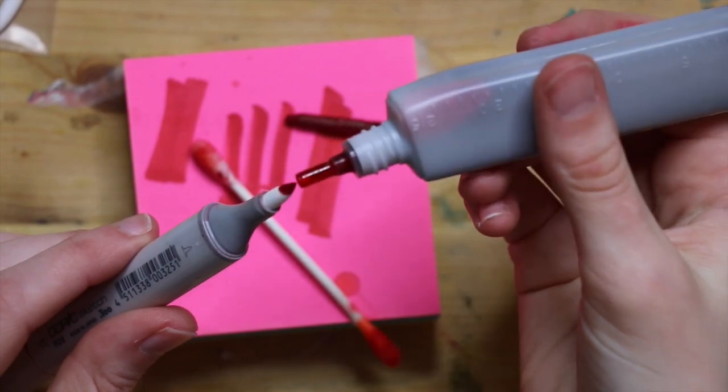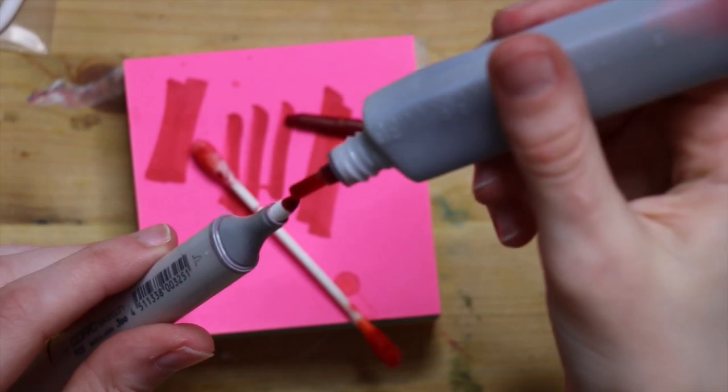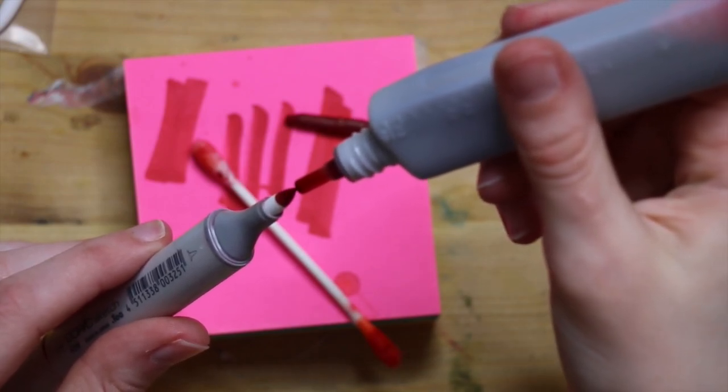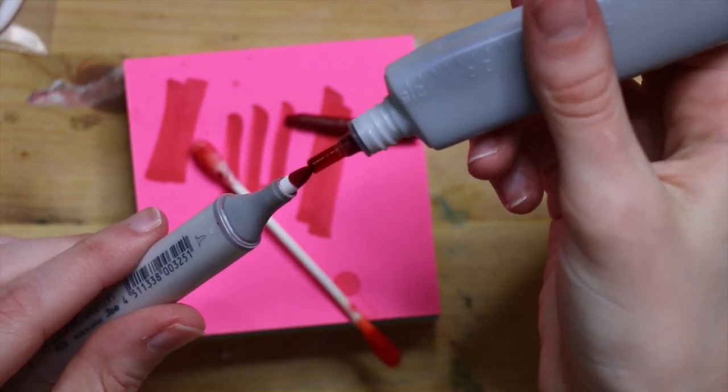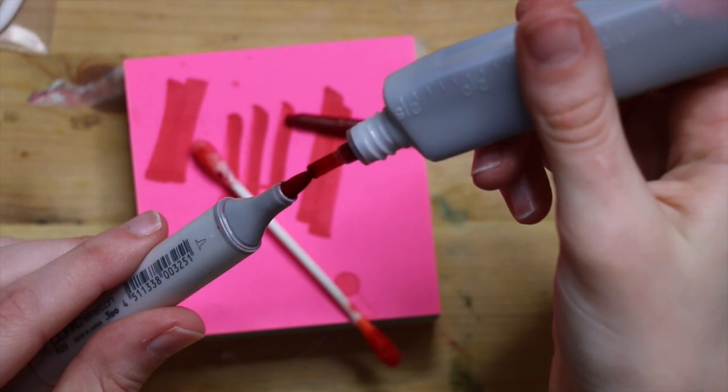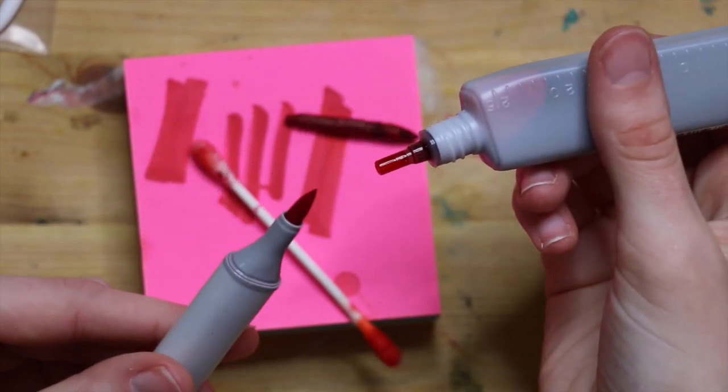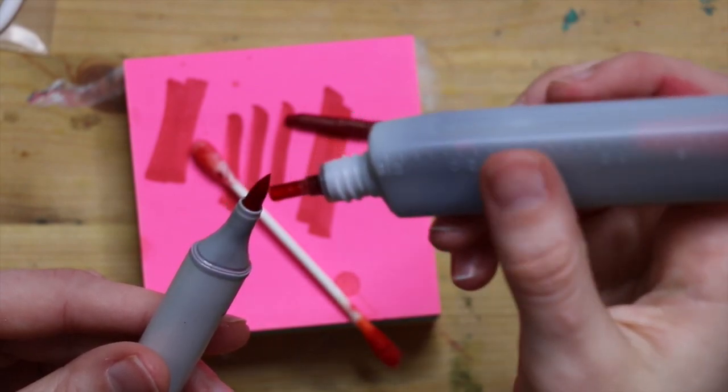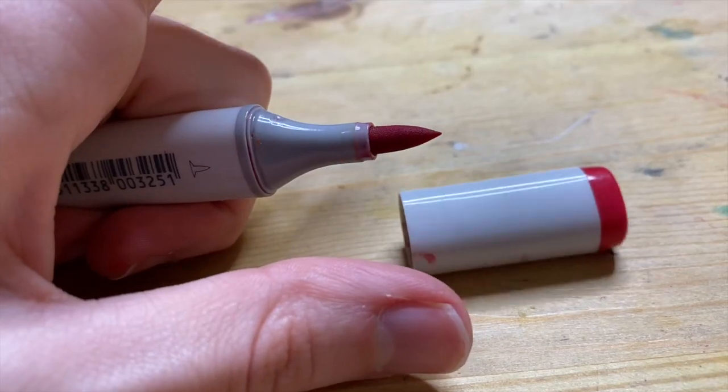And then when you get to the point of refilling it, the way that I found easiest is to touch the tip to the tip of the ink dispenser, I guess is what you could call it, and just slowly drop it down. Don't go too fast because it'll take a little bit of time for the nib to start absorbing the ink. If you go too fast, you'll just make a really big mess. But make sure that you put enough ink in there that when you're done, the tip looks nice and plump and juicy.